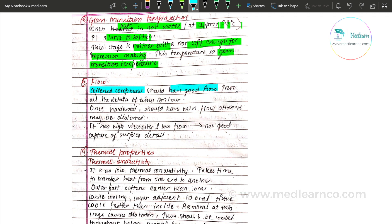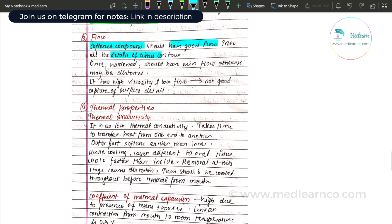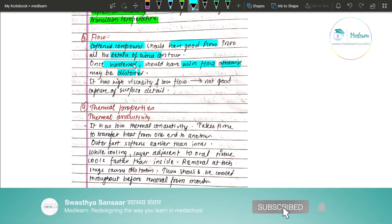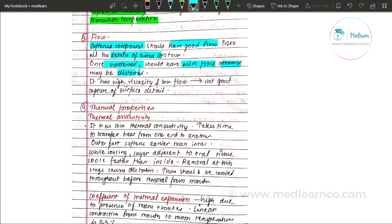Regarding flow: the compound should have good flow so that it can capture all the details in the tissue contour. However, it should also have minimum flow at body temperature so that it does not distort when in the mouth. Impression compound has high viscosity and low flow, meaning it cannot capture good surface details.